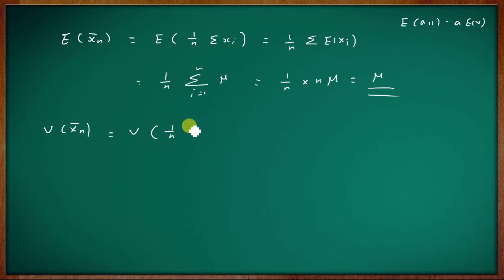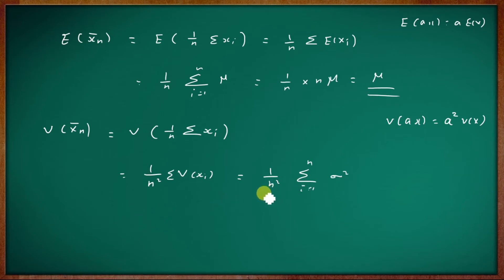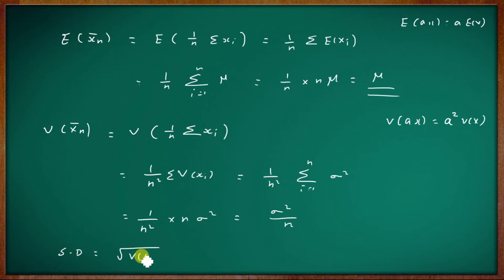Now compute the variance of x-bar-n: Var(1/n summation xi) equals 1/n² times summation of V(xi). Since V(xi) equals sigma squared, this is 1/n² times n sigma squared, which equals sigma squared by n. Therefore the standard deviation of x-bar-n equals the square root of sigma squared over n, equal to sigma over root n.